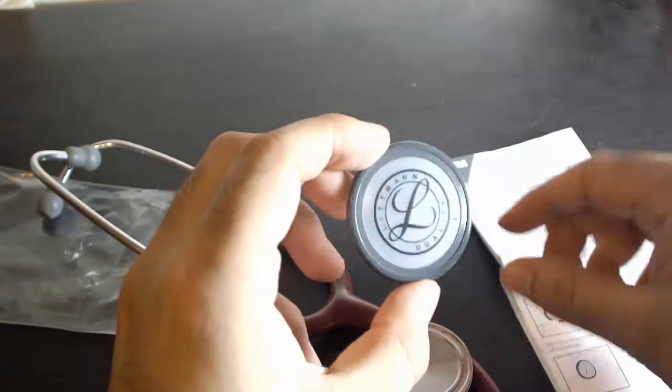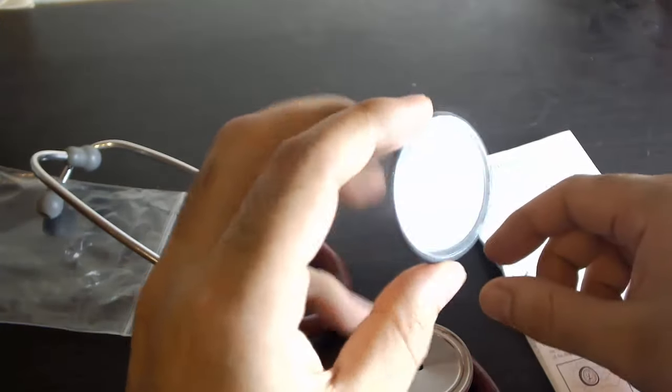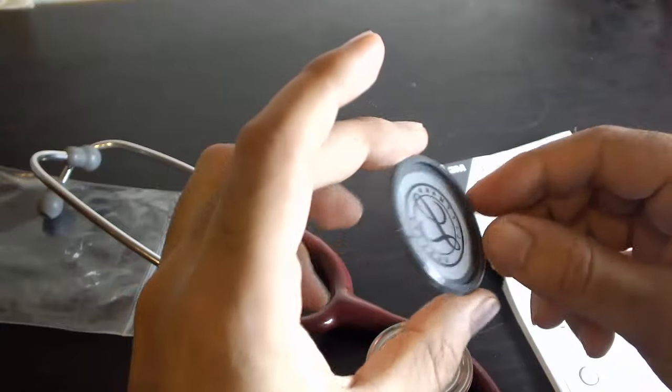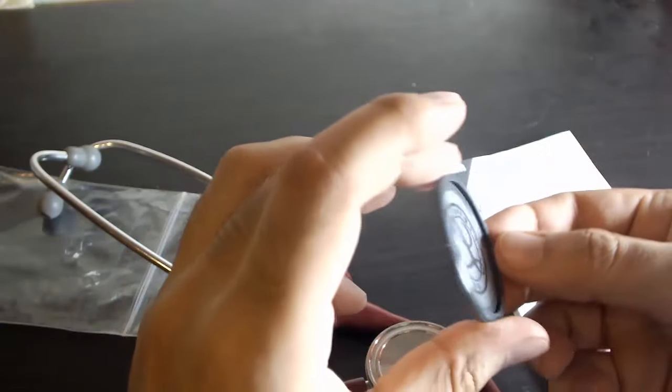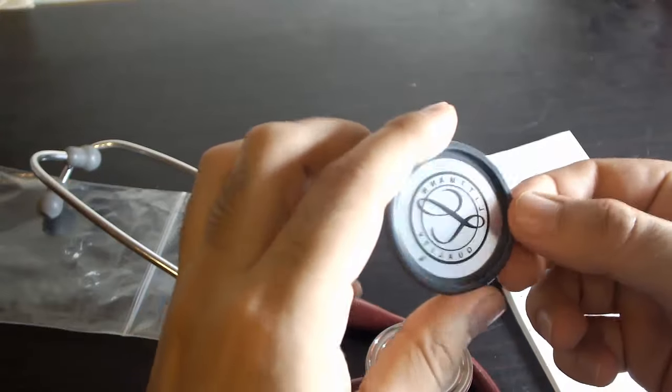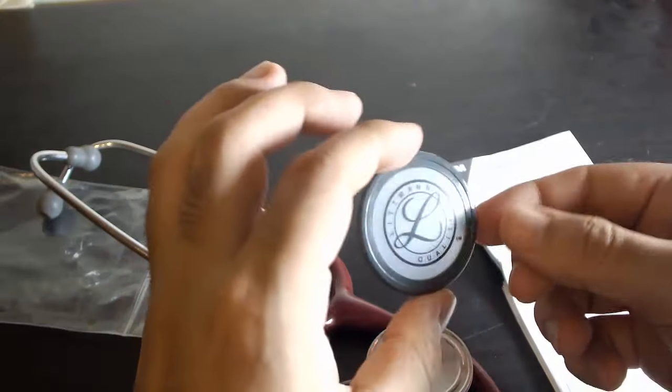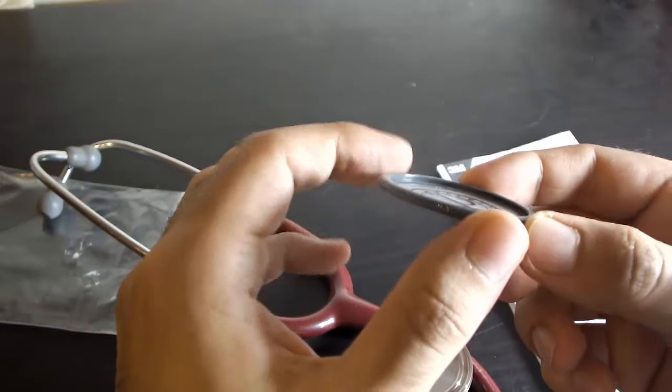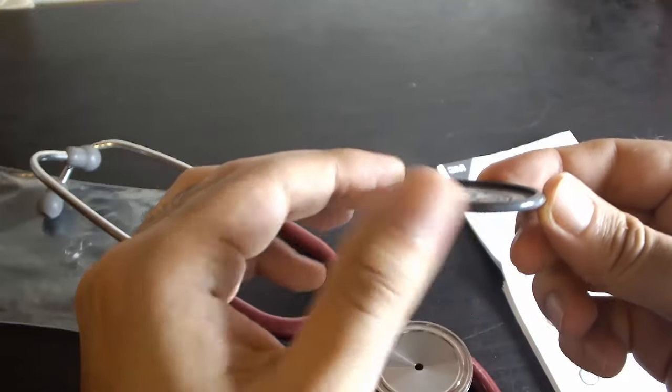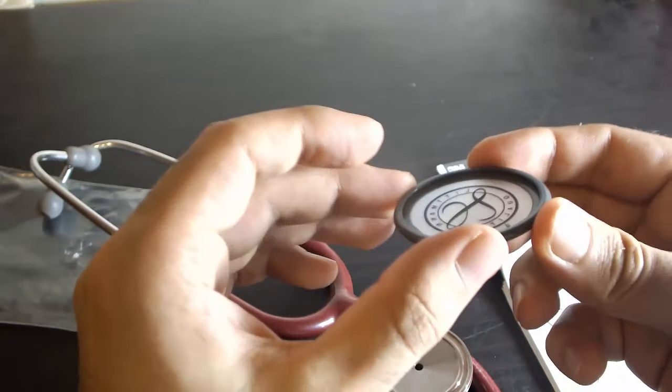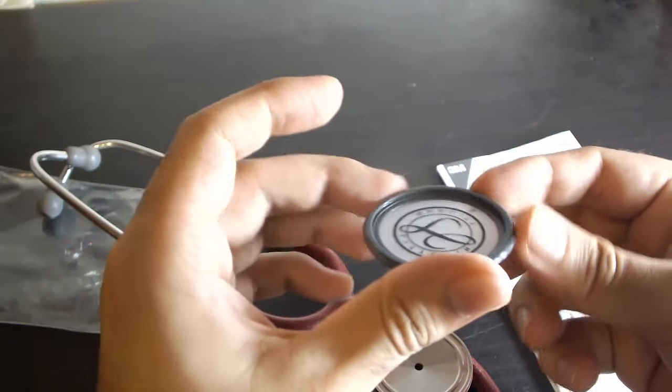So I have fitted the tunable diaphragm inside the rim. Be sure to check the diaphragm before fitting it onto the chest piece—that it is fitted inside the rim completely and no part of the diaphragm is protruding inside.